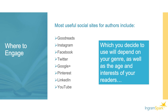Twitter also lets you build lists. There's a gear wheel next to the follow button where you can put people on a list. At Where Writers Win, we have lists for literary agents, book reviewers, and people tweeting book news. You can go to those lists and see quickly who's tweeting about what. Definitely go after reviewers on Twitter — there are a lot of them.